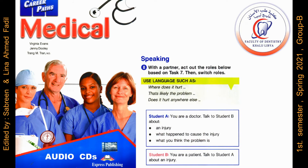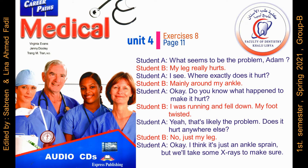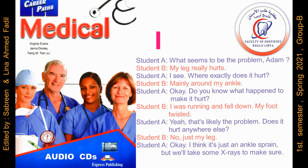Exercise 8. With a partner, act out the roles below based on task 7, then switch roles. What seems to be the problem, Adam? My leg really hurts. I see. Where exactly does it hurt? Mainly around my ankle. Okay. Do you know what happened to make it hurt? I was running and fell down. My foot twisted. Yeah, that's likely the problem. Does it hurt anywhere else? No, just my leg. Okay, I think it's just an ankle sprain, but we'll take some x-rays to make sure.